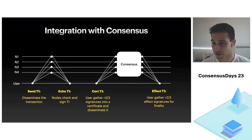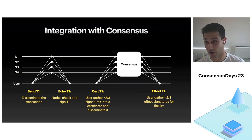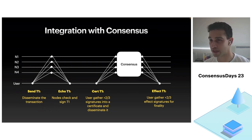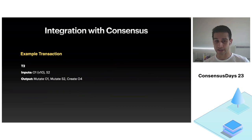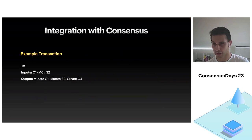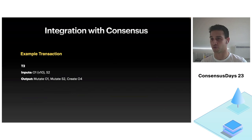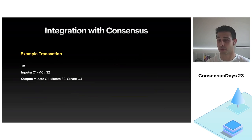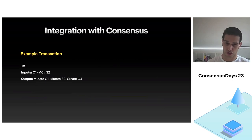Now, what happens if the transaction includes at least one shared object? We need to go through consensus. Transaction T2 takes object O1 at version 10, exactly as before, and a shared object S2 with no specified version — it is impractical for the user to specify a version for a shared object, since it may mutate very fast under load. The output will be to mutate O1, mutate shared object S2, and create a new object O4.